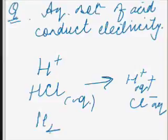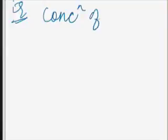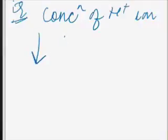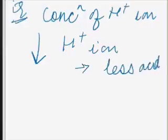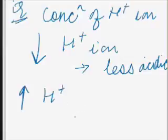Now, the next question: What effect does the concentration of H⁺ ions have on the acidic nature of the solution? A decrease in the concentration of H⁺ ions in solution is indicative of less acidic nature of the solution — if H⁺ ion concentration is low, the solution is less acidic. While an increase in H⁺ ion concentration in solution is indicative of more acidic nature of the solution.